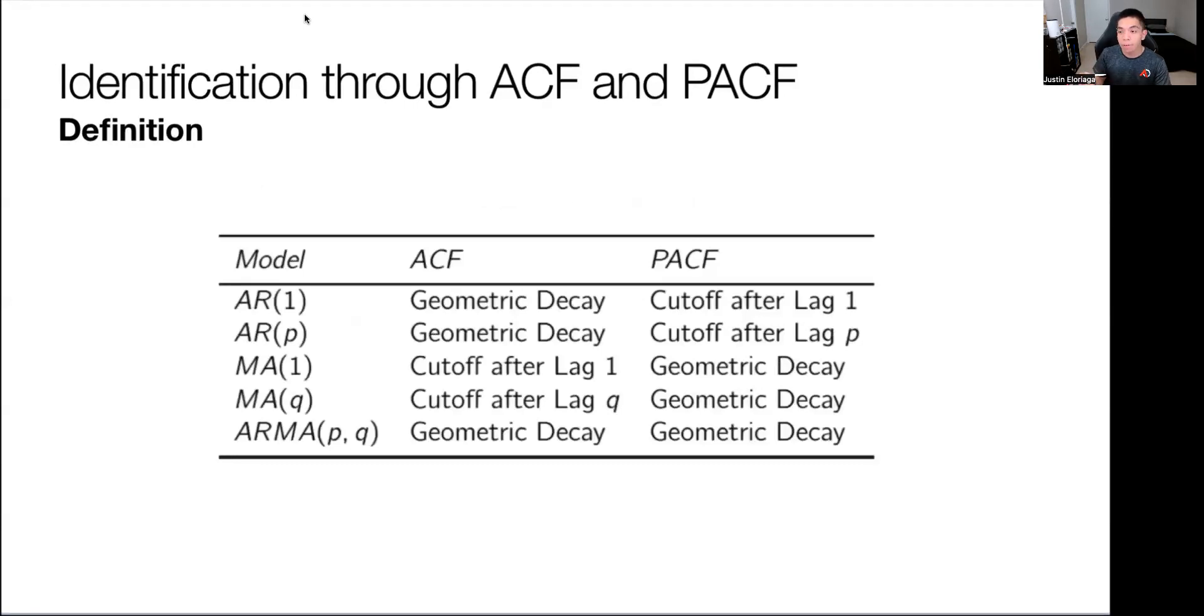To summarize our identification via the ACF and the PACF: for an AR(1) we see geometric decay and a cutoff after lag 1 with a PACF. For an AR(p) it's geometric decay for the ACF and a cutoff after lag p. The MA would be exactly the opposite. What's surprising is if we combine the two in what we call an ARMA process, autoregressive moving average, when you have to specify both the moving average and the autoregressive lags, we see a geometric decay for both.